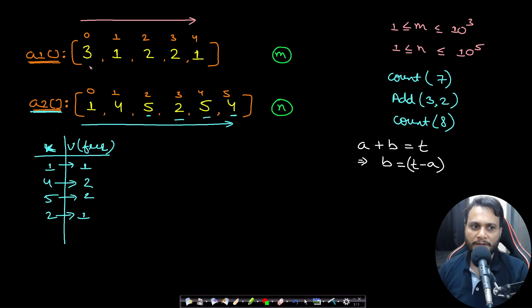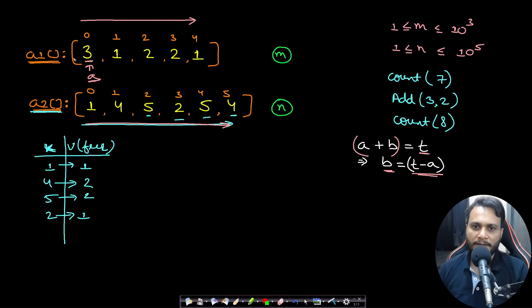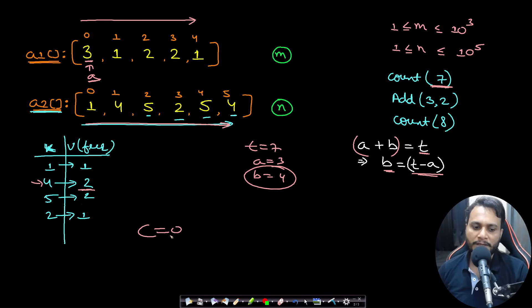With the hash map built, we iterate through each item in array one assuming it as value 'a'. We look for 'b' = target minus 'a' by querying the hash map frequency in O(1). For example, with target seven: a=3, so b = 7-3 = 4, and frequency of 4 is two, so we add two to our counter.